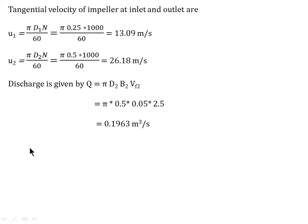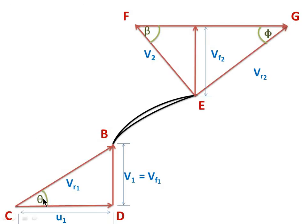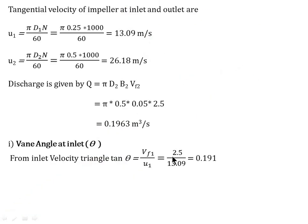The first parameter to calculate is vane angle at inlet, theta. From the inlet velocity triangle, tan(theta) equals Vf1 divided by U1. Since Vw1 equals 0, V1 equals Vf1. So tan(theta) equals 2.5 divided by 13.09, which equals 0.191. Therefore theta equals tan⁻¹(0.191), giving theta equals 10.81 degree.